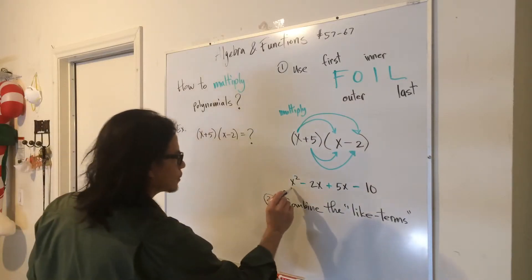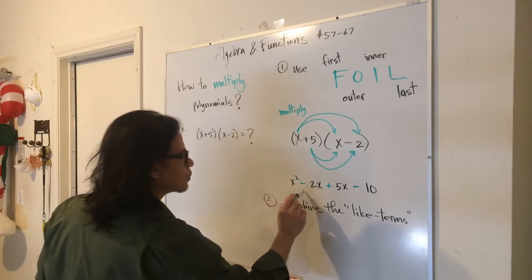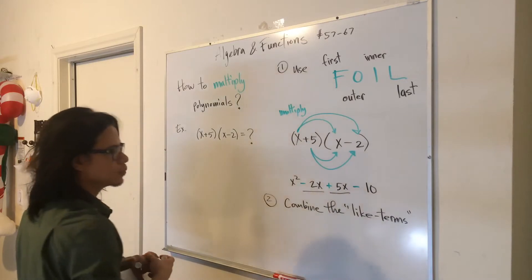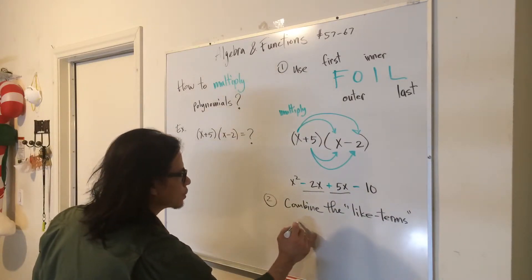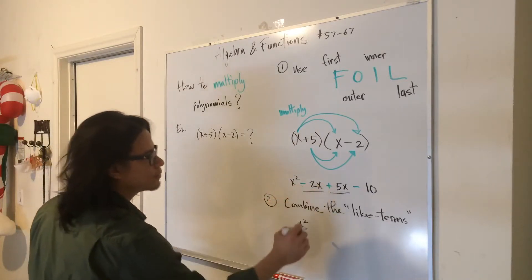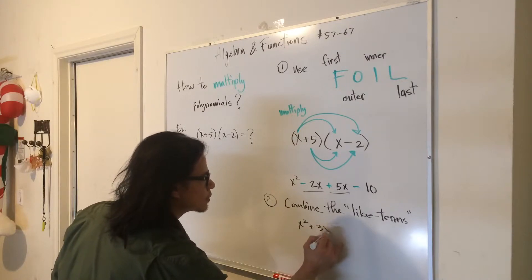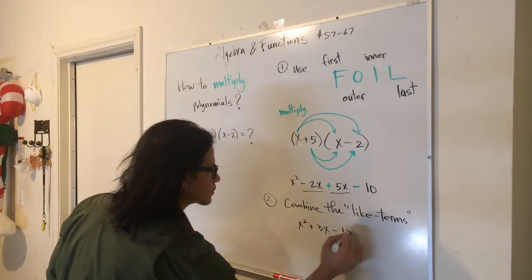And they are x—nope, nothing to combine with x squared. So we have negative 2x and then positive 5x. We can combine those two. So in our final answer, we're going to have x squared. Negative 2 plus 5 is positive 3, so we are going to say plus 3x minus 10. There it is.